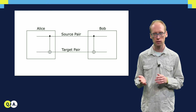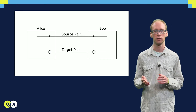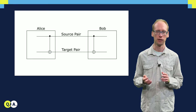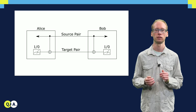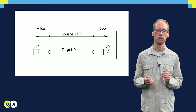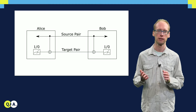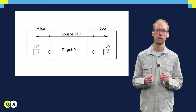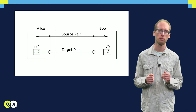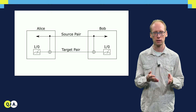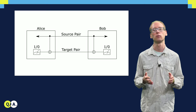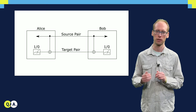The CNOTs effectively correlate the two copies. Next, Alice and Bob measure the two qubits of the target copy locally. Because the target and the source copy were correlated, by collapsing the correlations of the target copy, they effectively project the source copy in different states, depending on the outcomes of their measurements.